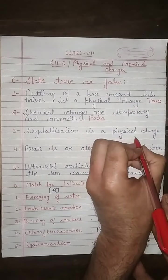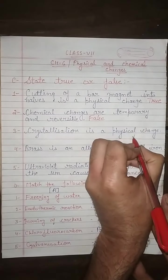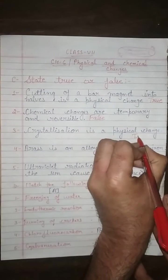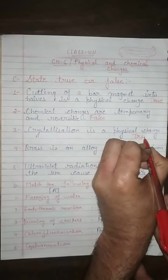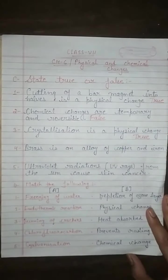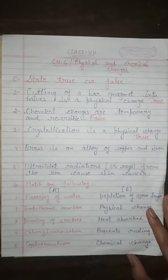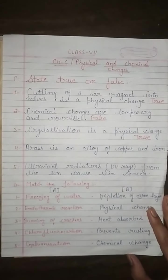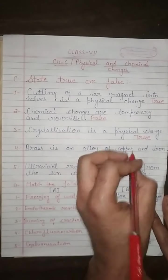Crystallization is indeed a type of physical change. Fourth, brass is an alloy of copper and iron — this is false, because brass is an alloy of copper and tin, so this statement is false.